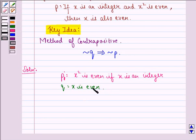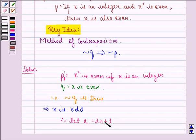Suppose Q is false, that is, not Q is true. This implies x is odd. Therefore, let x be equal to 2n plus 1, which is an odd number form.